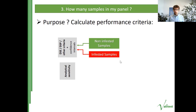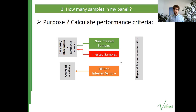Another very important characteristic of a test is analytical sensitivity — the limit of detection. That is why in the majority of cases we recommend the use of diluted infested samples with serial dilutions in order to evaluate the limit of detection. Finally, the third group of important criteria are repeatability and reproducibility, for which we can use all samples: non-infested, infested, and diluted infested.